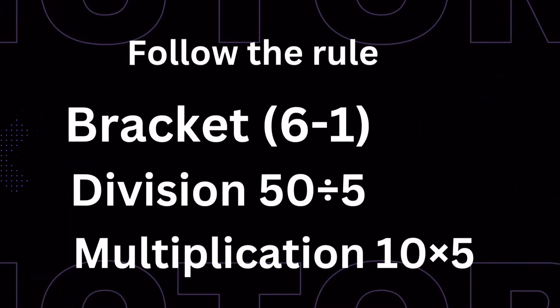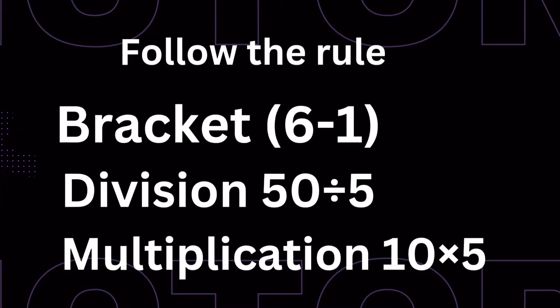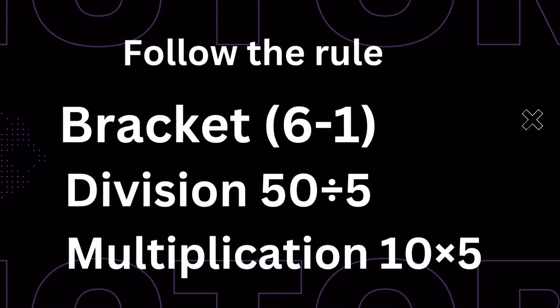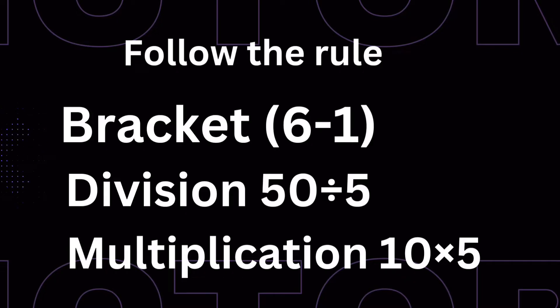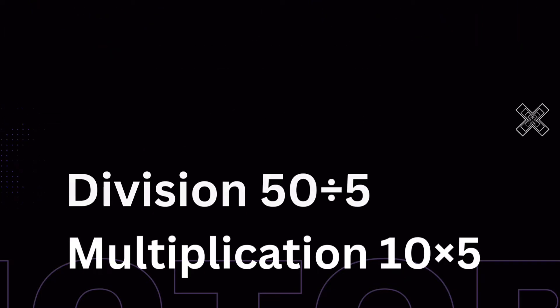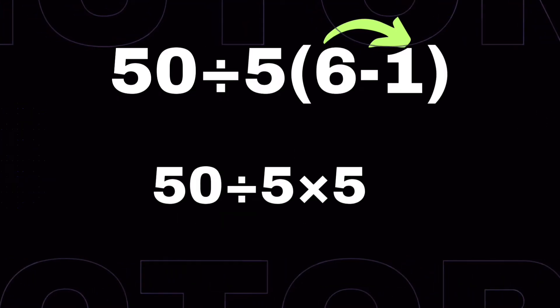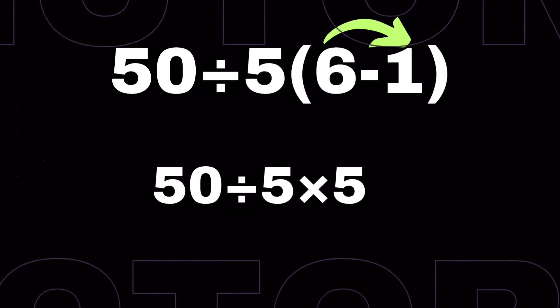Follow the rule. First of all, we should solve the bracket, that is 6 minus 1. Then division, 50 divided by 5. Then multiplication, 10 times 5.